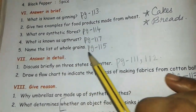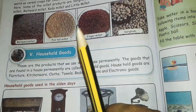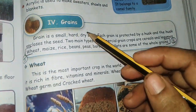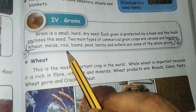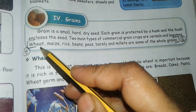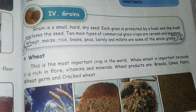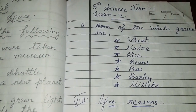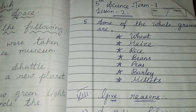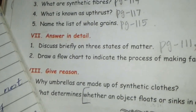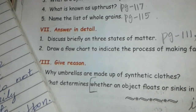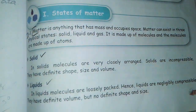Fifth question: name the list of whole grains. See page number 115, in the wheat grains section, last line. The answer is: wheat, maize, rice, beans, peas, barley, and millets. You can write it like this also. Next — discuss briefly on three states of matter. See page number 111. The answer covers solids, liquids, and gases — gas is compressible.